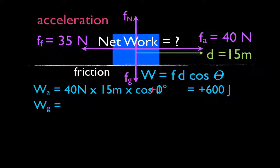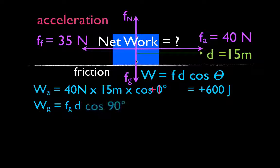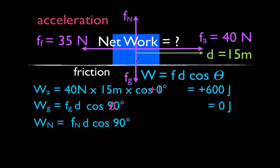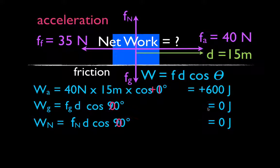What about the gravitational force? It's the force of gravity times the distance times the cosine of the angle between them. You should notice that the angle between the displacement and the gravitational force is 90 degrees. The cosine of 90 is zero, so the gravitational force does zero work. We can apply the same thing to the normal force, because the normal force is at a right angle to the displacement — the cosine of 90 is zero, so the normal force does no work. It's not that these forces don't exist; it's just that forces at right angles to displacement do no work on the object.